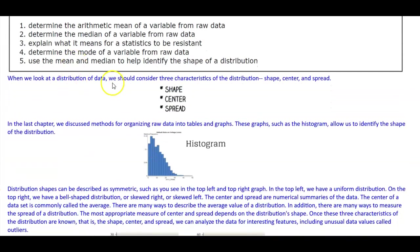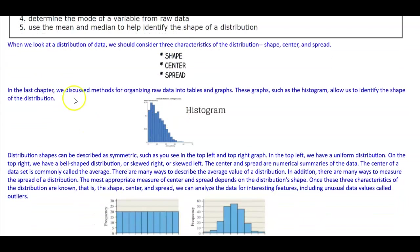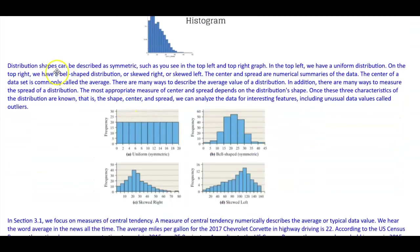When we look at a distribution of data we should consider three characteristics: the distribution shape, center, and spread. In the last chapter we discussed methods for organizing raw data into tables and graphs. These graphs, such as the histogram, allow us to identify the shape of the distribution. Distribution shapes can be described as symmetric, such as the ones you see in the top left and top right graphs.